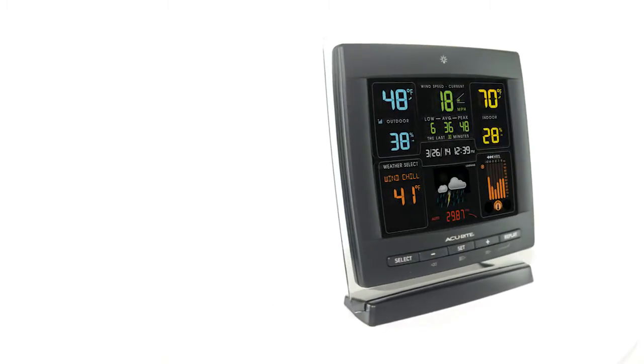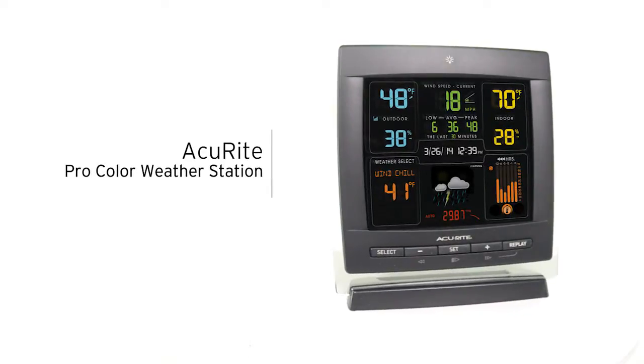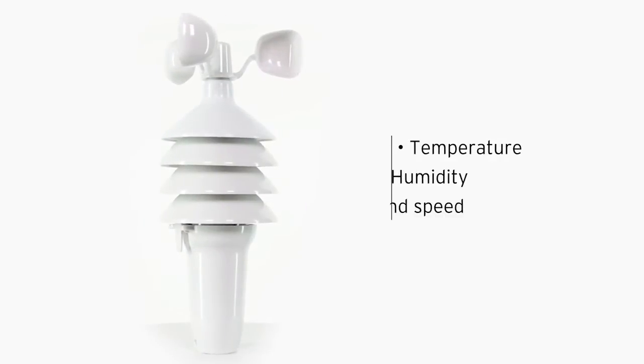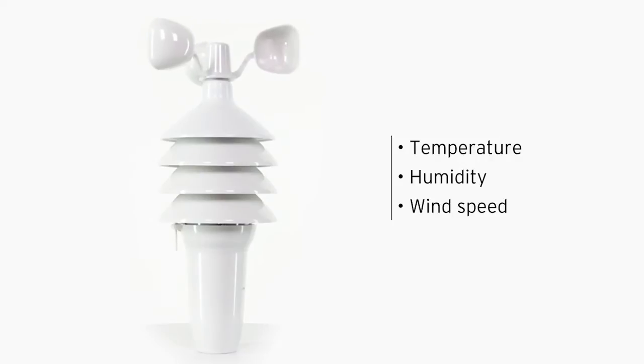Get the outdoor environmental information you want right in your own backyard with AcuRite's Pro Color Weather Station. Its high-precision 3-in-1 weather sensor accurately measures three different conditions, including the temperature, humidity, and wind speed.